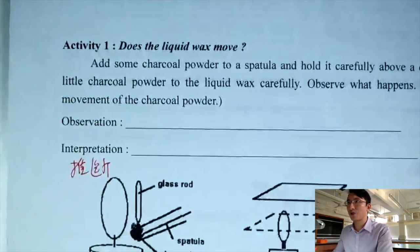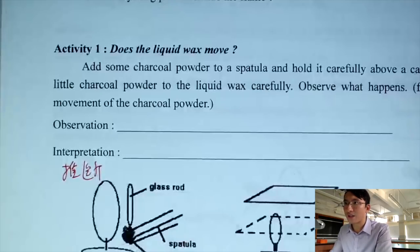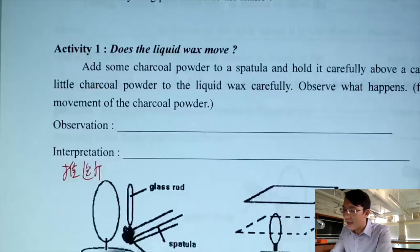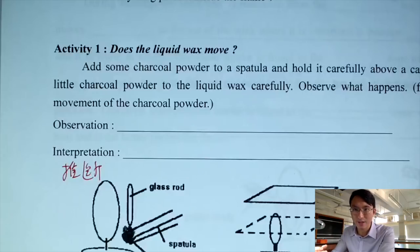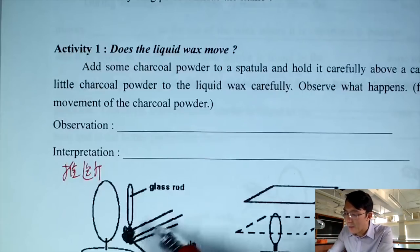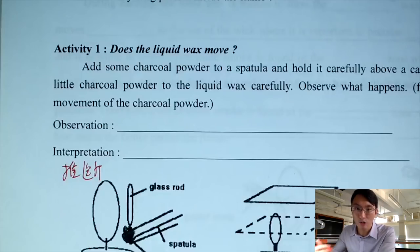For activity one, what we are trying to do is to put a small amount of charcoal powder — some black powder — onto the top of the candle. If you have used a candle before, at the top there should be a small puddle of colorless liquid wax. We add some charcoal powder onto that puddle to see if the charcoal powder moves, and if so, how does it move.